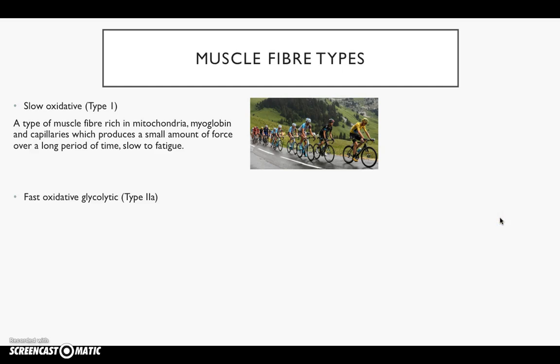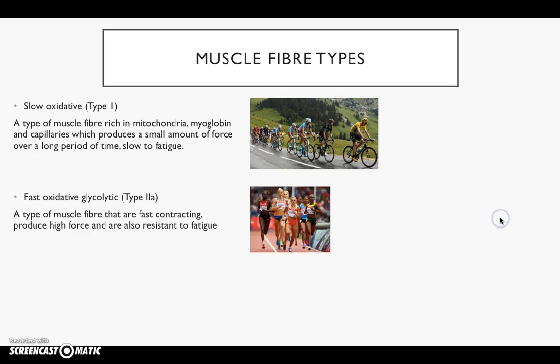Fast oxidative glycolytic fibres, also called type 2a, are fast contracting, produce high force, and are also resistant to fatigue. The sporting events we refer to here are events such as the 800 metres and the 400 metres — middle distance events are what we're looking at for fast oxidative glycolytic.